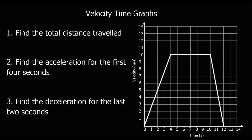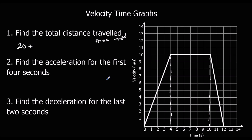Here is an example. The first question says find the distance travelled, which means we need the area under the graph. The easiest approach is to split it into triangles and rectangles — or it is a trapezium so we could use that formula. Using triangles: 4 times 10 halved is 20; 6 times 10 is 60; 2 times 10 halved is 10. So the total distance travelled is 90 metres.